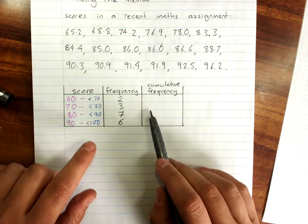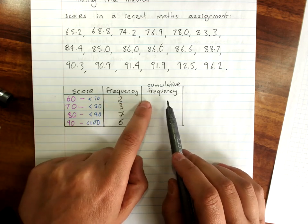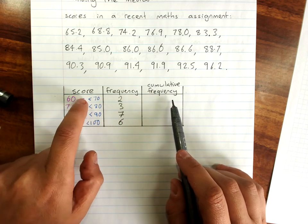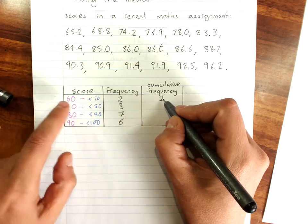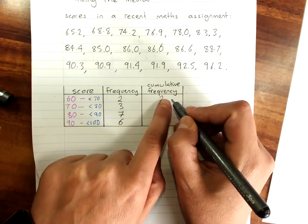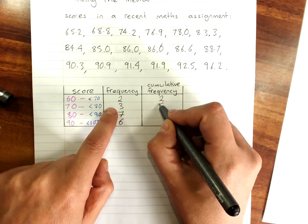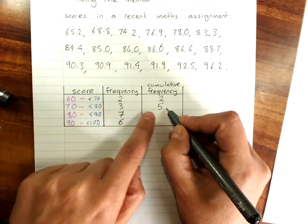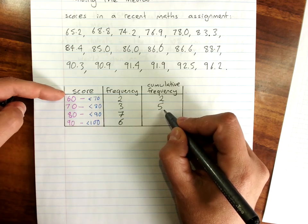Cumulative frequency, you may remember, is adding up the frequency so far. So what that gives us, for the first row, it just says two students got scores of up to just under 70. For the next row, we then add on the frequency here. So two plus three is five. And that says five students got scores of below 80, including those below 70.